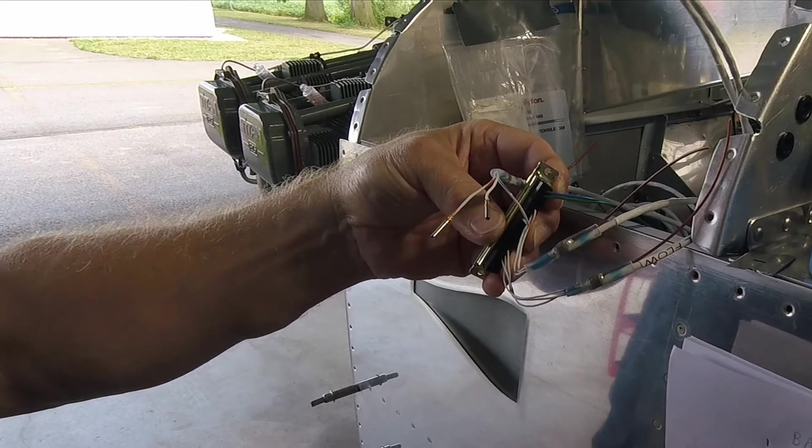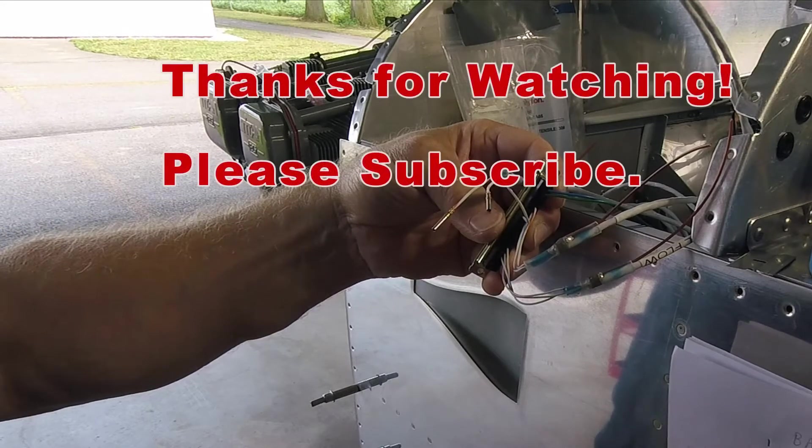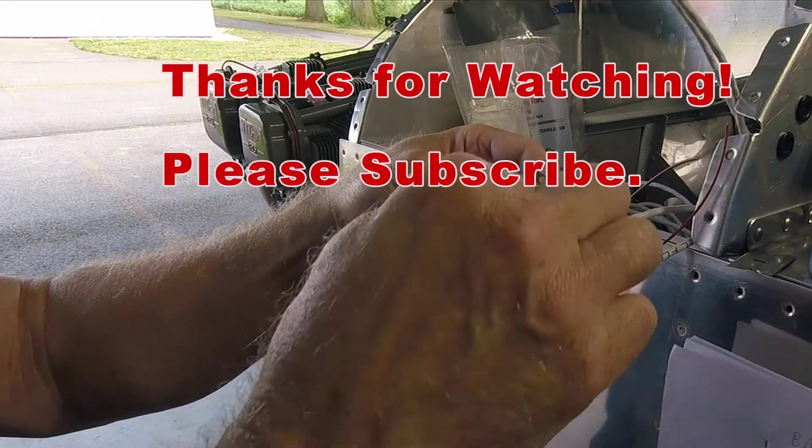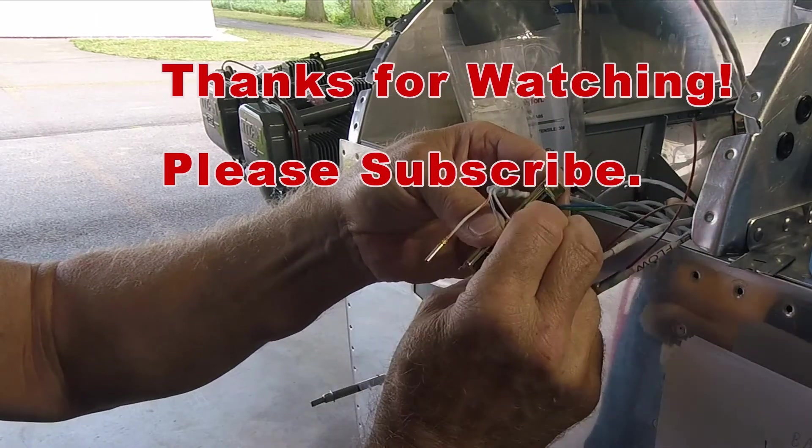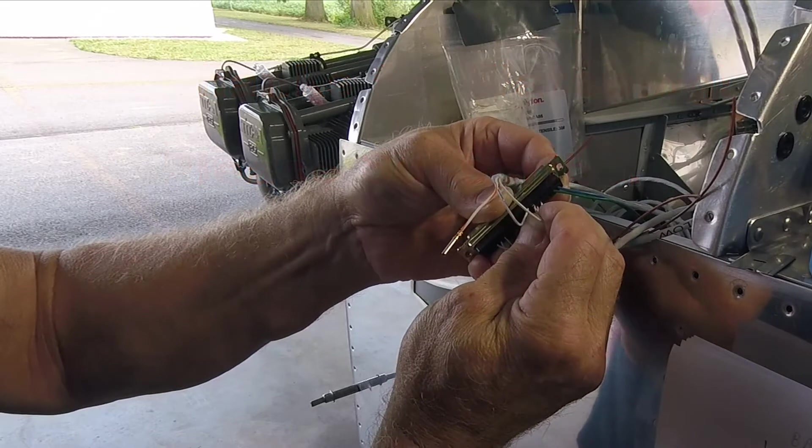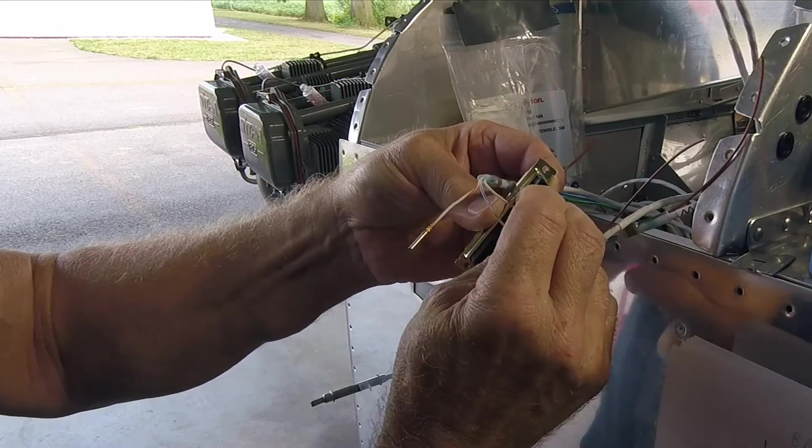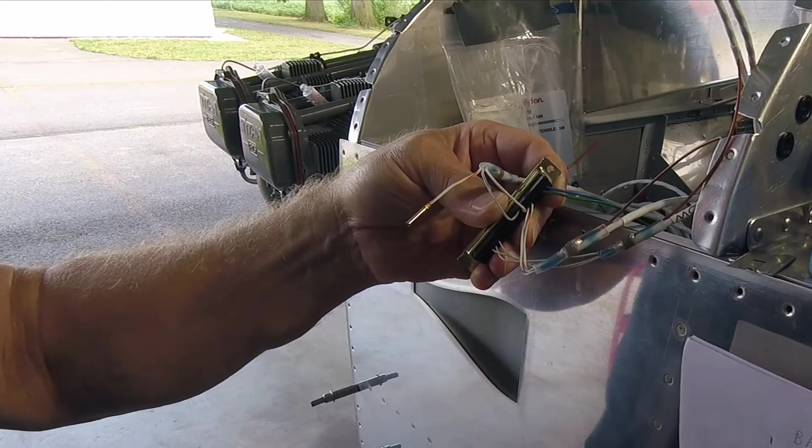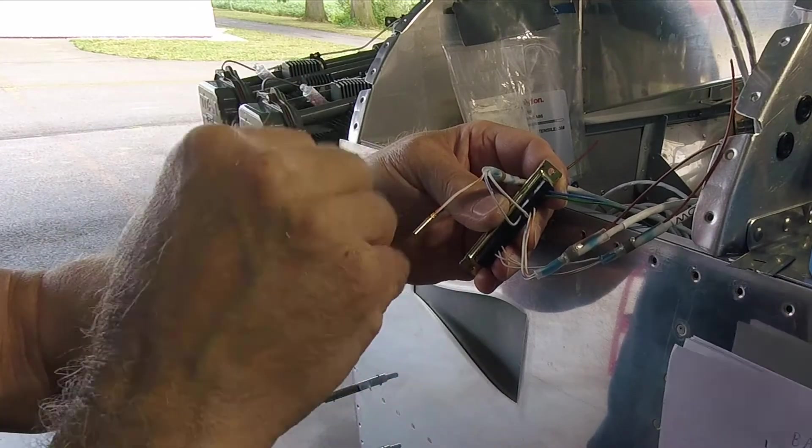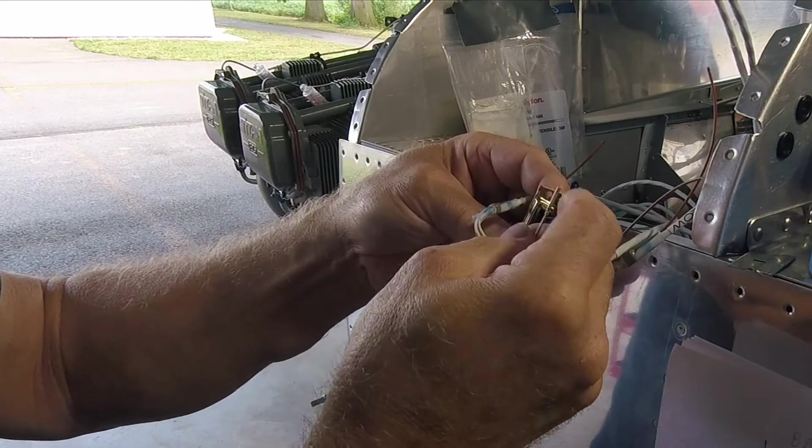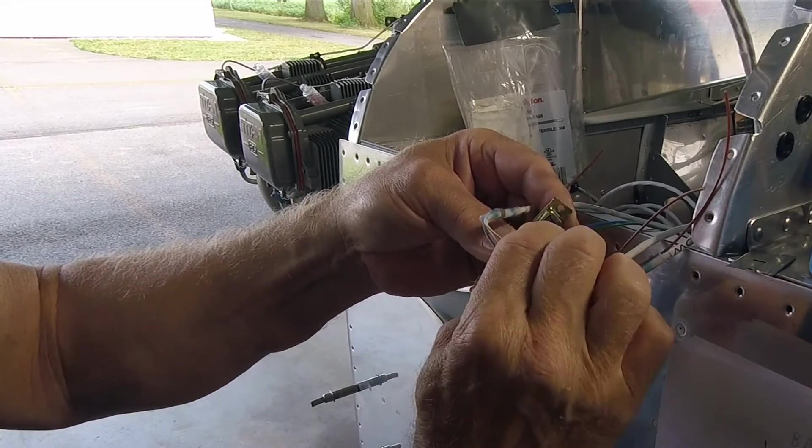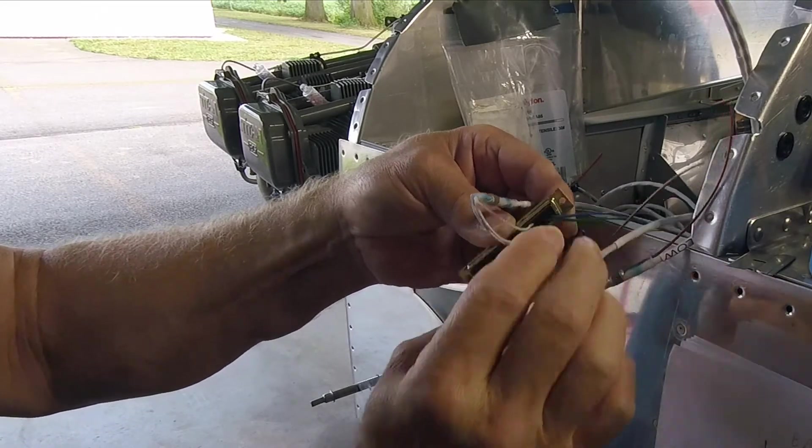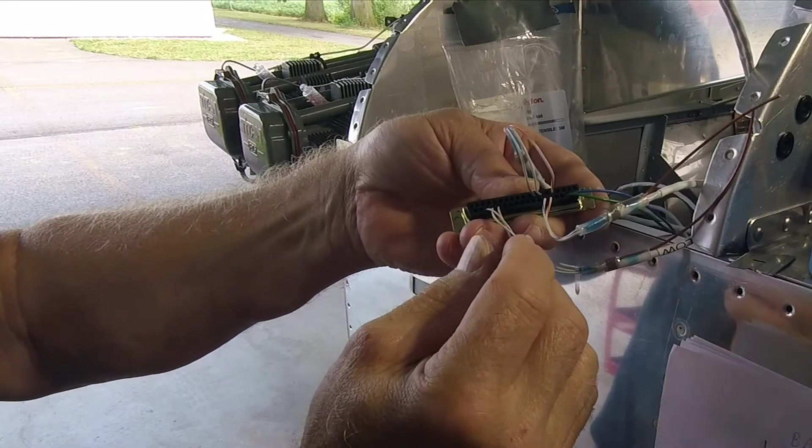So, manifold blue is 12. The signal is white. It goes in 13. That's 13. Push it in. Click. And our 5 volts is on pin 15. So I'm going to skip one. 14 and 15 is there. Click and lock. A little tug. Not coming out.